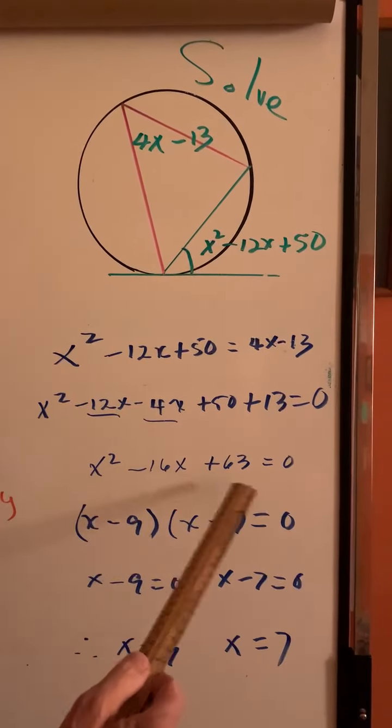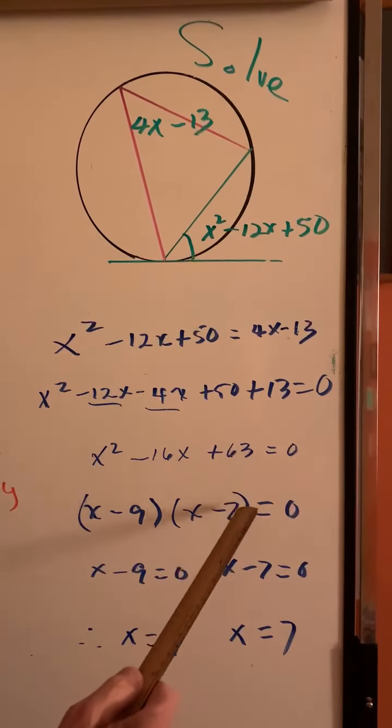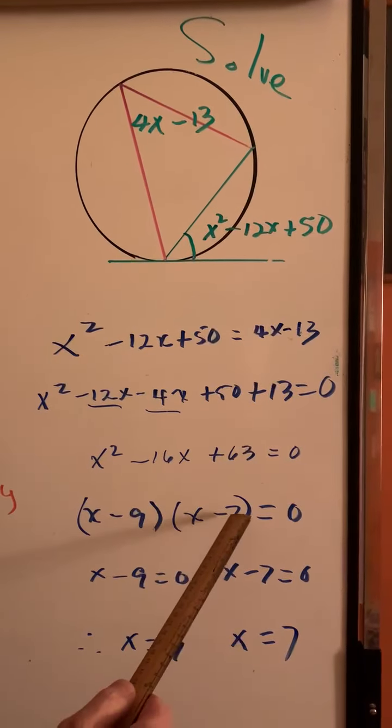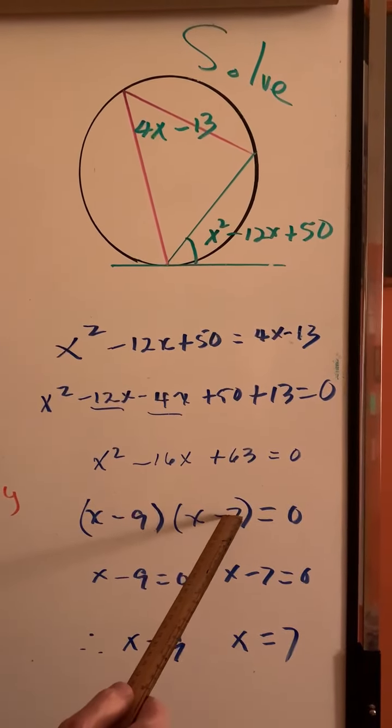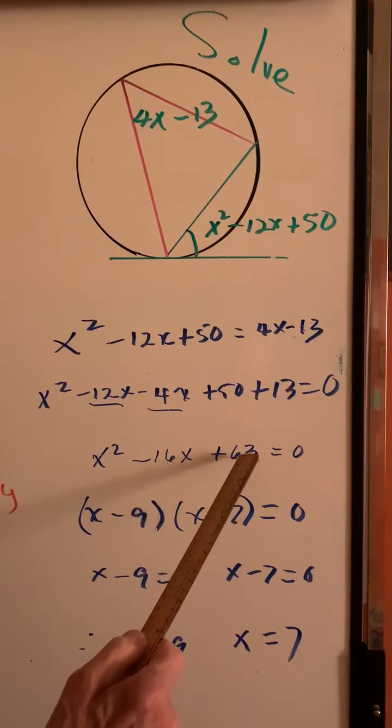To factor this, you need to know your times tables. 9 times 7 is 63. And they add up to negative 16 if they are both negative. And their product is positive.